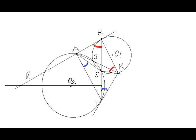Since line L is tangent to circle omega at point R, angle ARS between tangent line L and chord RS is equal to angle RKS inscribed in circle omega, which is subtended by chord RS. This is the known fact in geometry that follows from the chord-tangent theorem. These two angles are highlighted by red arcs. The common chord here is RS.